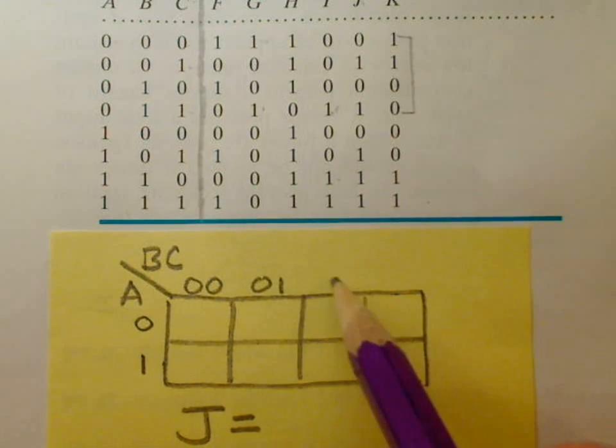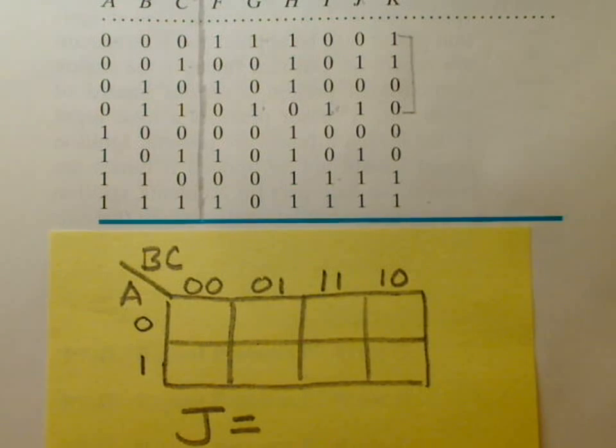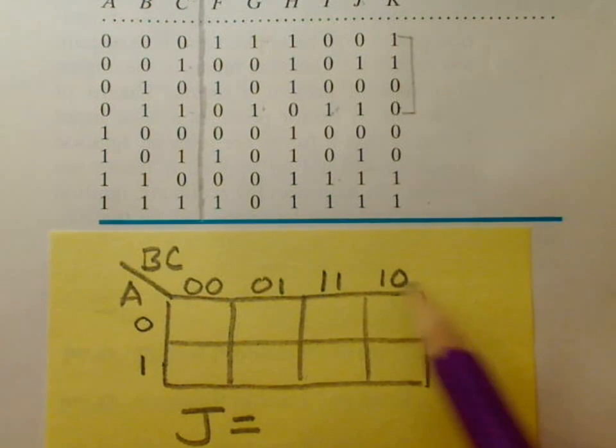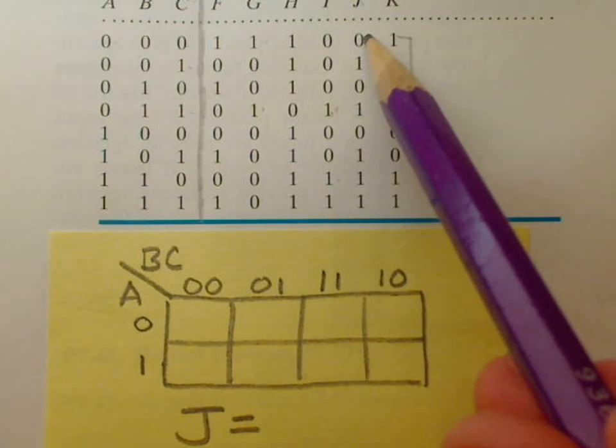Zero zero, zero one, one one, and one zero. So do notice that you have to have it in that particular order in order for a Karnaugh map to function properly.